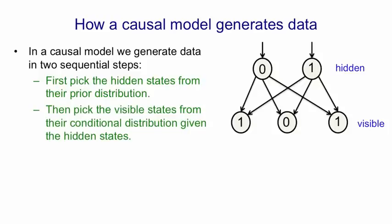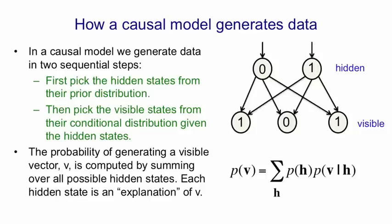It's using logistic units, and it uses biases for the hidden units and weights on the connections between hidden and visible units to assign a probability to every possible visible vector. The probability of generating a particular vector v is just the sum over all the possible hidden states of the probability of generating that hidden state times the probability of generating v given that you've already generated that hidden state.